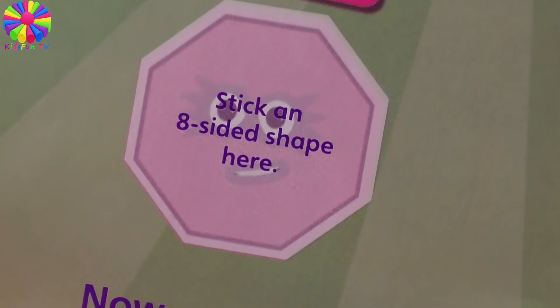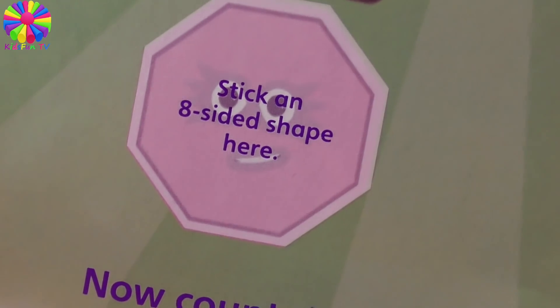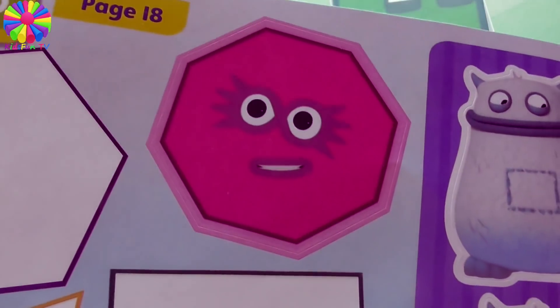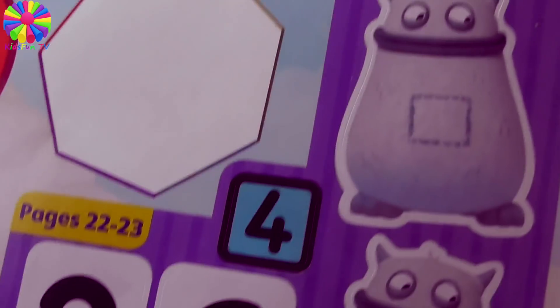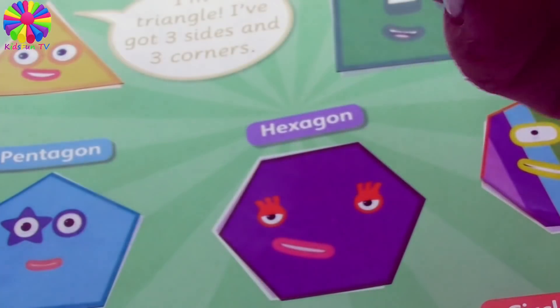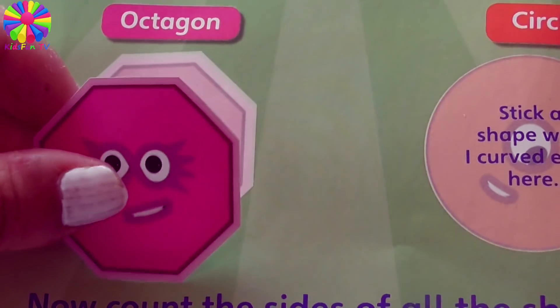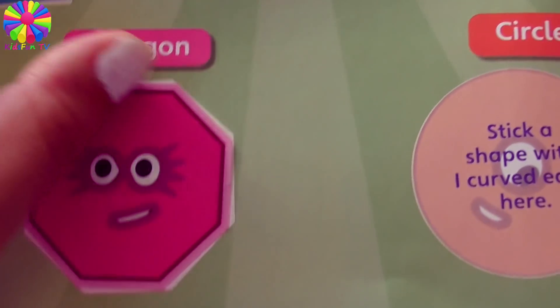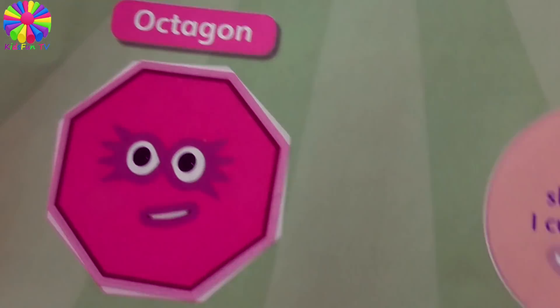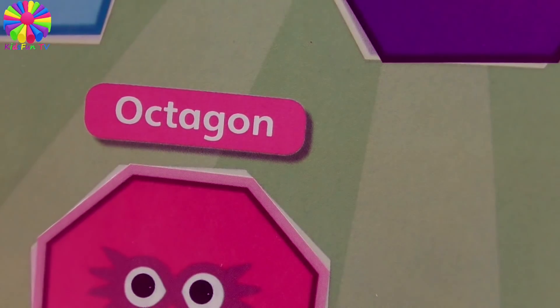This one is an eight-sided shape. Which block has eight sides? Is it Numberblock Eight? Of course it is! Numberblock Eight has eight sides, and Numberblock Eight is an octagon.